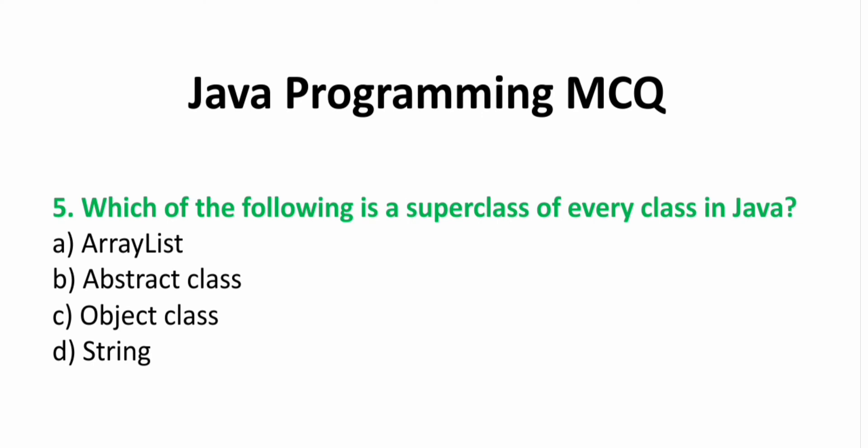Fifth, which of these is the superclass of every class in Java? A. ArrayList  B. Abstract class  C. Object class  D. String. Answer: C. Object class. Object class is the superclass of every class in Java.